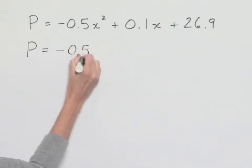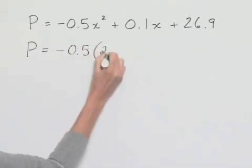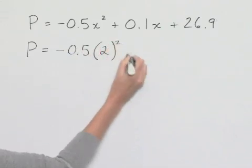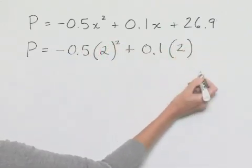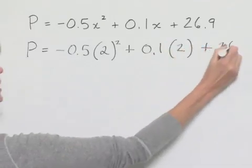So we're going to have negative 5 tenths multiplied times 2 squared plus 1 tenth multiplied times 2 plus 26.9.